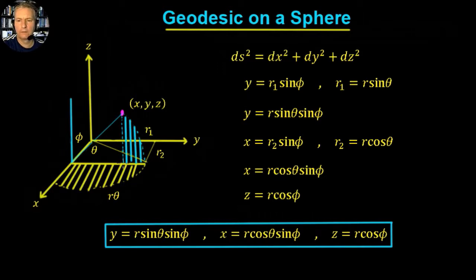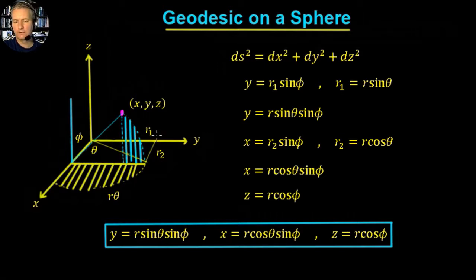If we look at the length y first — the length y is the perpendicular dropped from this point down onto the x,y plane. That gives us this little distance here, which is our y distance. We can see that we've named this distance r1 and this other distance r2.